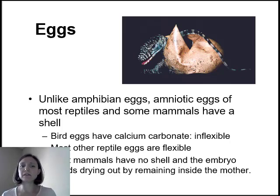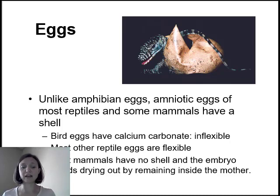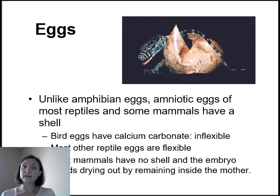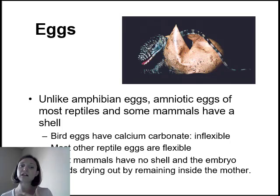Typically in birds, they have a calcium carbonate egg, so it's inflexible. Partly the reason for that is that birds are endothermic and maintain their own body temperature, which means they can keep those eggs warm as well. If you sit on an egg that's squishy like a reptile's soft egg, birds would crush it. So they have a hard calcium carbonate egg to keep it warm and maintain the embryo's body temperature. Most reptile eggs are flexible — not that hard calcium carbonate we see in birds. Most mammals and some reptiles have also lost the shell, and the embryo avoids drying out by remaining inside the mother for its development.